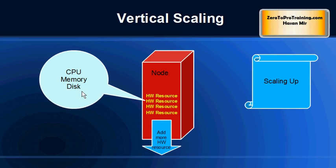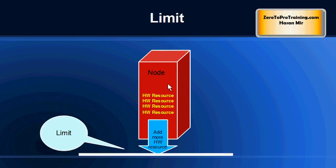For example, in order for a system to give you more storage, you need to add more disks. In order for a system to process more data within the same period of time, you need to add more CPU and more memory. No matter how scalable or powerful your computer is, vertical scaling has a limit.